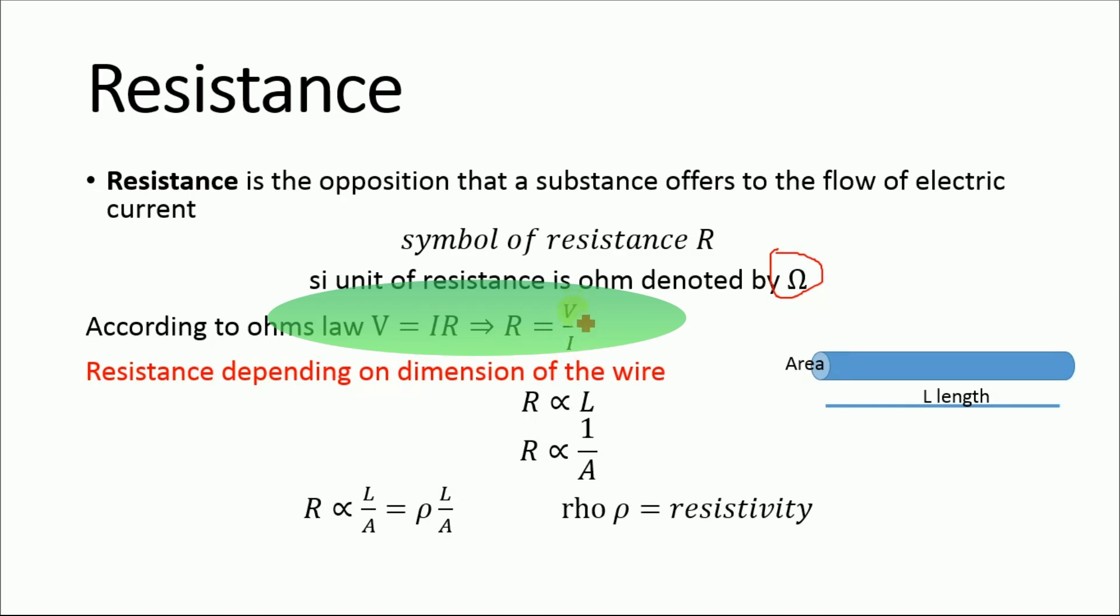V is the voltage and I is the current. If V equals one and I equals one, we get one ohm, which is the value of resistance. Now, resistance depends upon the dimensions of a wire.